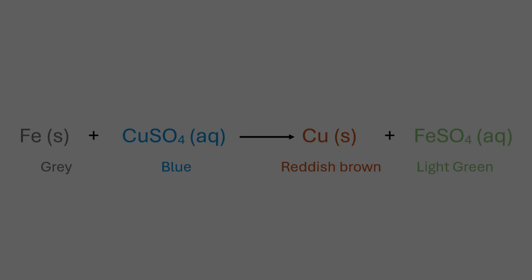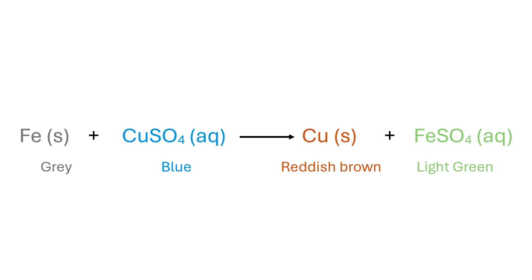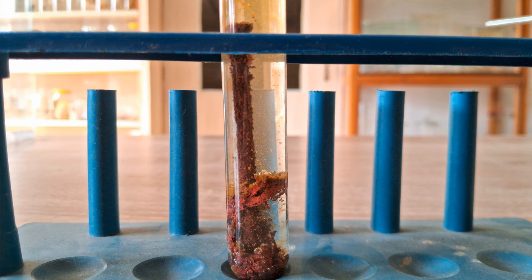The single displacement reaction of iron nail in copper sulfate can be represented by the chemical equation shown here. Initially the copper sulfate solution is deep blue. As the reaction progresses, the green color formed is ferrous sulfate solution. The reddish-brown deposits formed on the surface of the iron nail are particles of pure copper. In this reaction, the more reactive iron displaces the lesser reactive copper from the blue copper sulfate solution. The iron atoms go into solution and combine with sulfate ions to form ferrous sulfate, which is light green in color. Simultaneously, cupric ions from the copper sulfate solution get deposited onto the surface of the iron nail to form solid metallic copper.